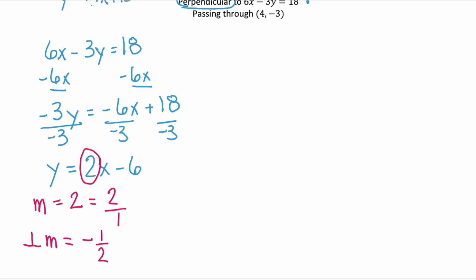So we know our new line is going to be y equals negative 1 half x plus b. So our last step is to figure out what b is, our y-intercept.